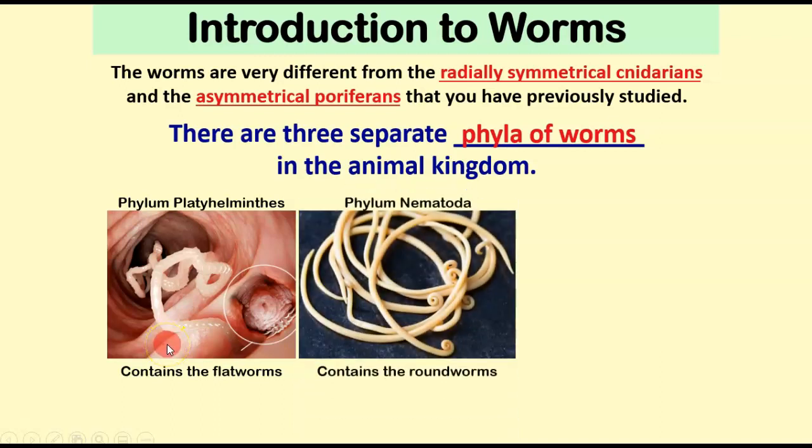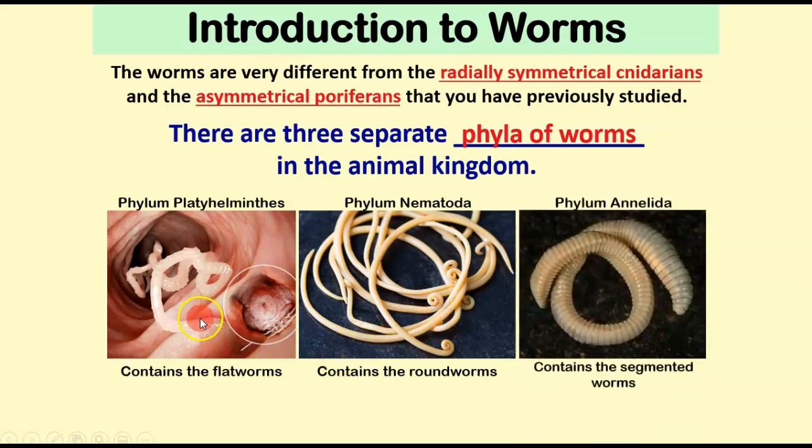There's also phylum Nematoda. These are the roundworms, and there's also a lot of parasites in this phylum. And then finally, and it's going to be a little while before we talk about these guys, the phylum Annelida, which is the segmented worm. And this is the phylum that a traditional earthworm lives in that you guys are all familiar with.